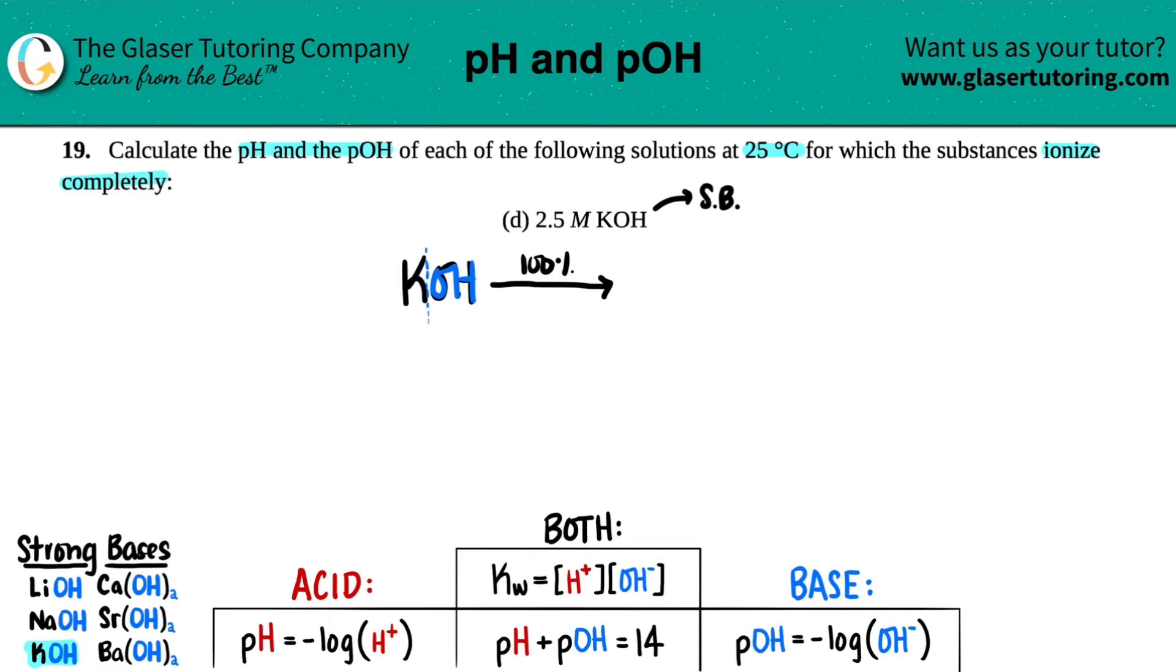So this would be K, which is in group one, so that's a plus one charge, and then plus hydroxide, which is OH minus. And it's balanced. It's one to one to one.